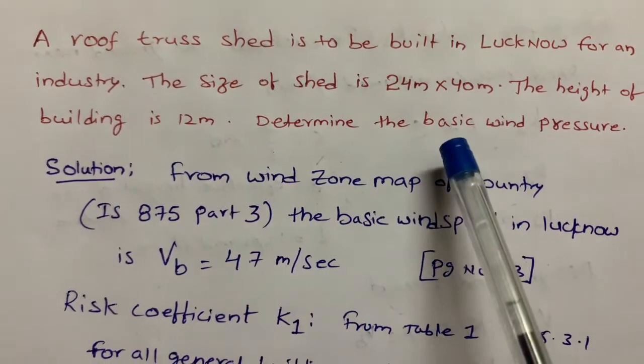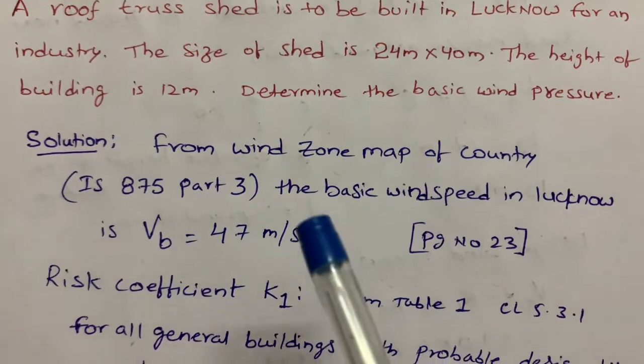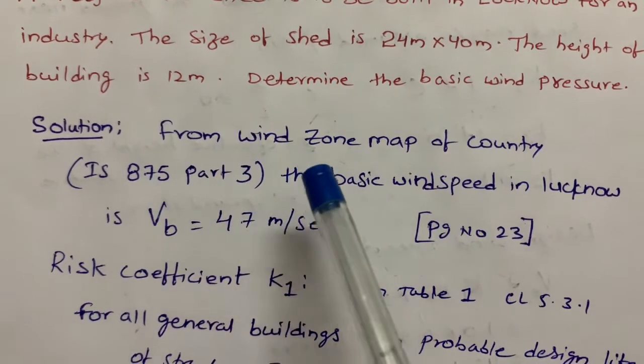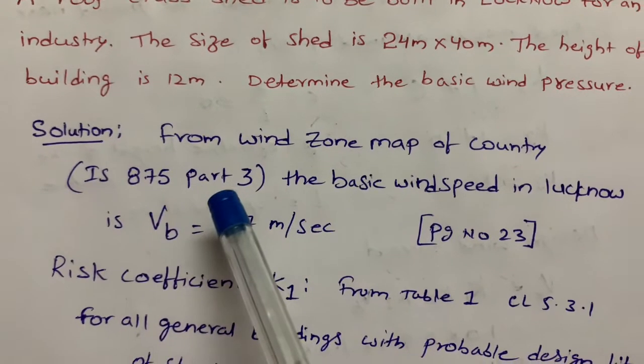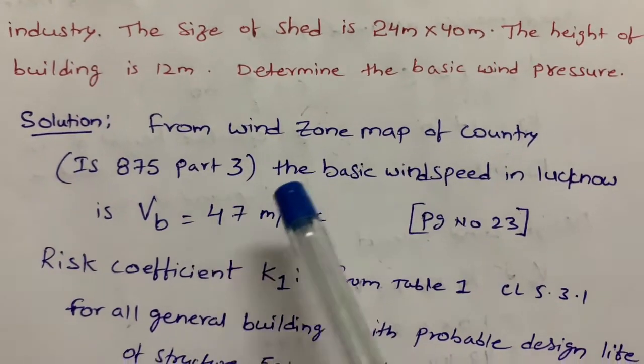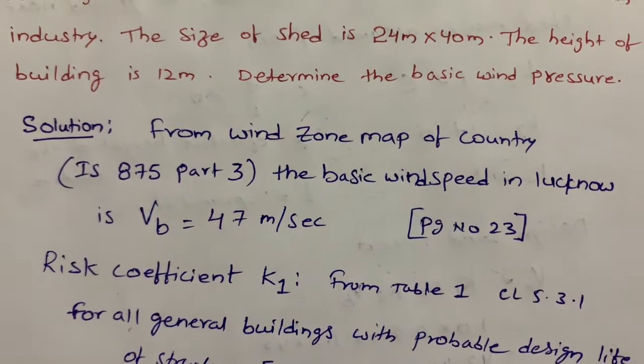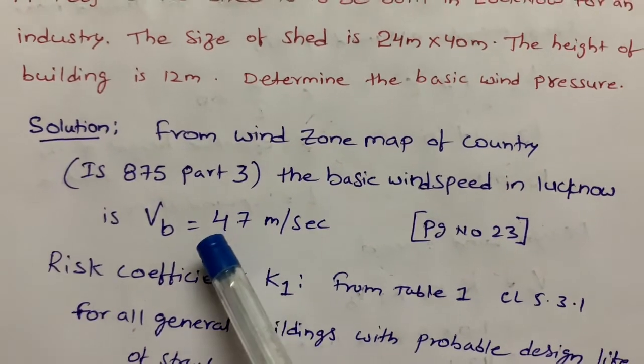Solution: From wind zone map of the country, by referring IS 875 Part 3, the basic wind speed in Lucknow is Vb = 47 m/sec. This is available on page number 23 in IS 875.